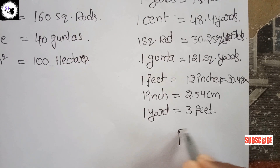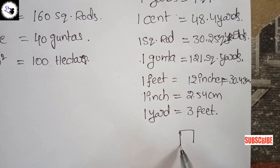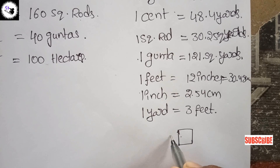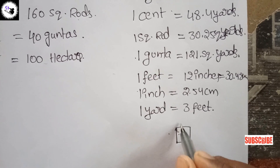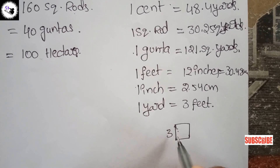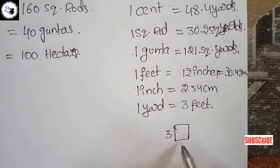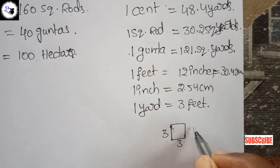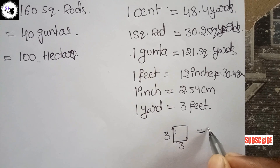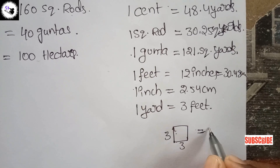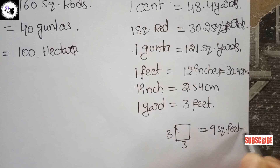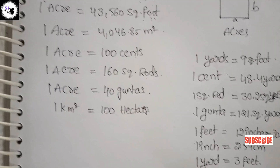Here is a worked example for area. One yard is equal to 3 feet, so one square yard is equal to 3 into 3, that is equal to 9 square feet.